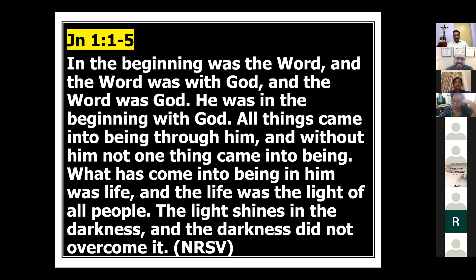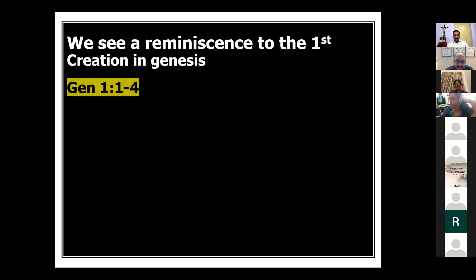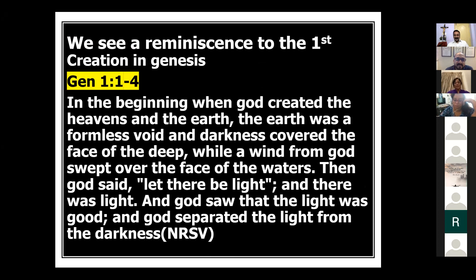What we see here is a reminiscence of the first creation in Genesis: 'In the beginning, when God created the heavens and the earth.' John chapter 1 begins, 'In the beginning was the Word,' while Genesis 1 begins, 'In the beginning when God created the heavens and the earth.' What is John trying to tell us?